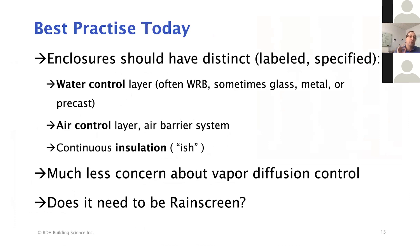Today, we should at least make sure that there are three distinct, labeled, and in-the-specifications items: the water control layer, which we often call a WRB; the air control layer; and a continuous insulation. Many times we combine the water and air control layer into one product, but we don't have to, and I'll show you examples where we do not.